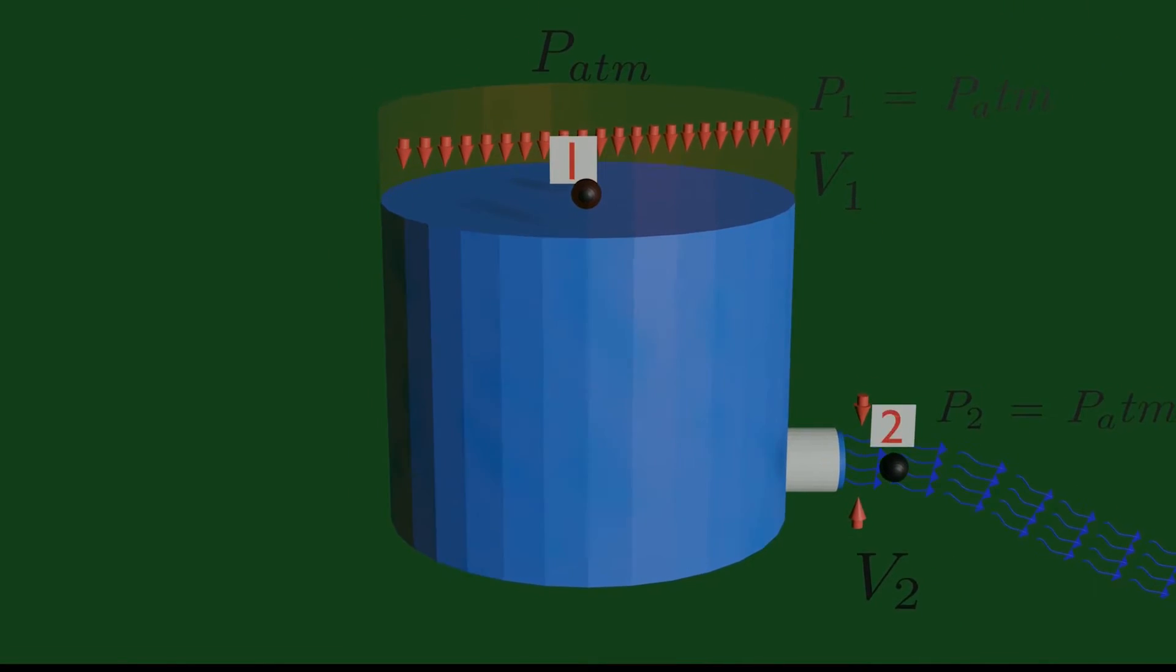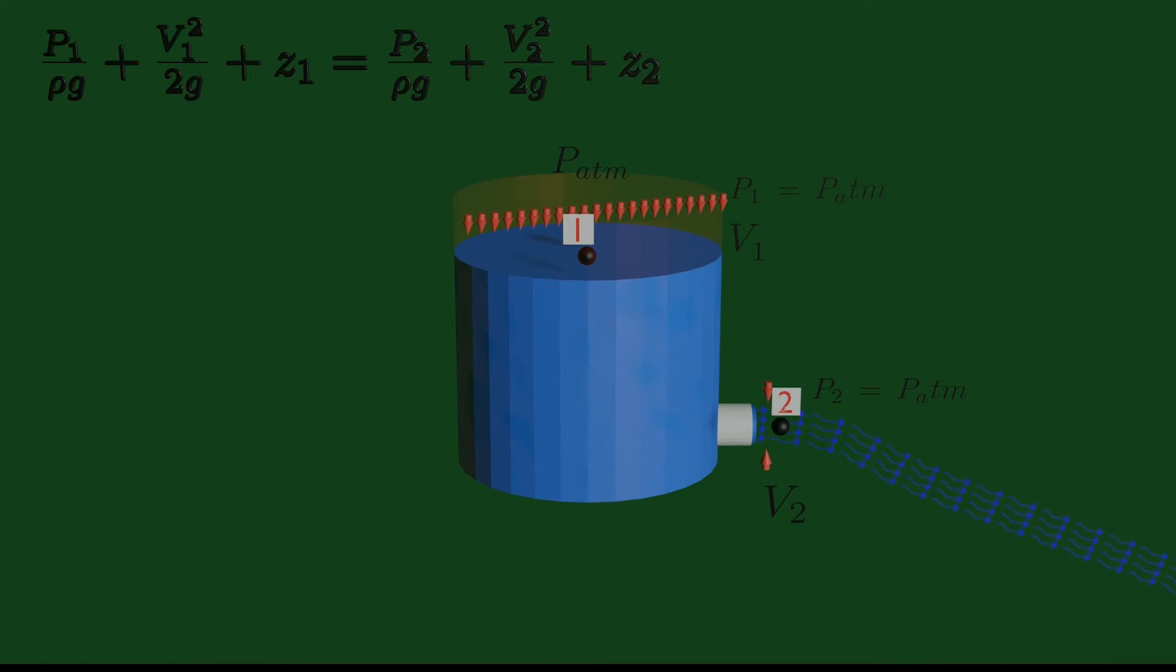Let us bring Bernoulli's equation now. Both pressure P1 and P2 are at atmospheric pressure, so we can easily cancel them out.